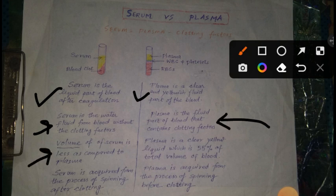Serum ki volume kam hoti hai agar hum plasma se usko compare kare. Jabki plasma jo hai, voh ek clear yellow fluid hota hai jiski total percentage, agar blood ki composition mein dekhen, toh 55% hota hai, aur plasma serum se zyada hota hai. Serum is acquired from the process of spinning after clotting. Serum ko agar aapko acquire karna hai, toh aap blood ko clot ho jane doge, uske baad aap usko spin karke separate kar loge serum ko — centrifuge me spin karke blood ki test tube ko clot se alag kar lenge.